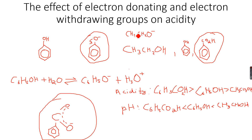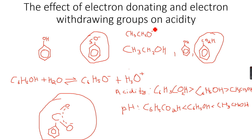The ethoxide ion is the least acidic. It has methyl groups attached, which are electron-donating groups. As they donate electrons towards the O negative ion, the negative charge density on the O negative ion increases, making it more likely to accept H+ ions. Because it has a greater negative charge density, it is less stable and more likely to accept H+ ions.